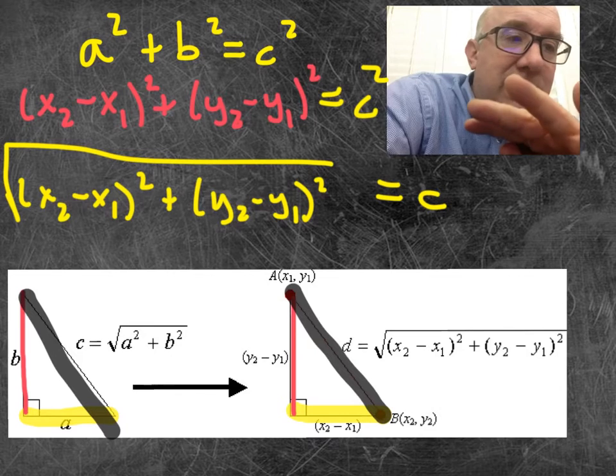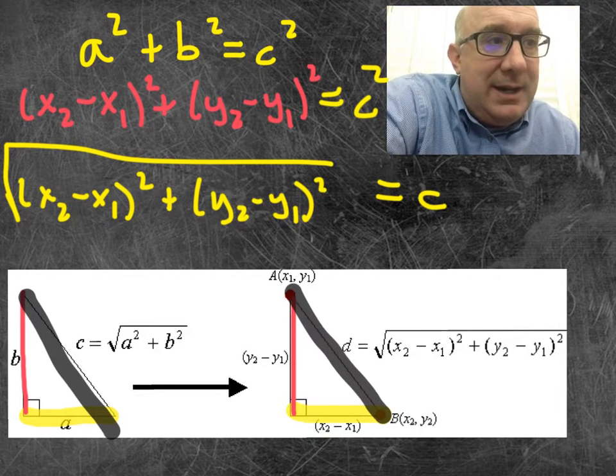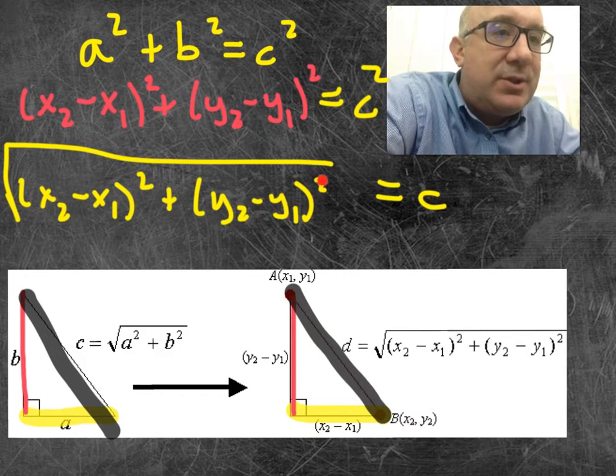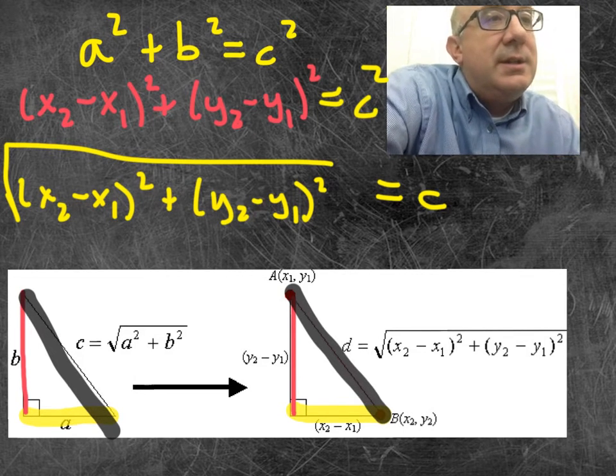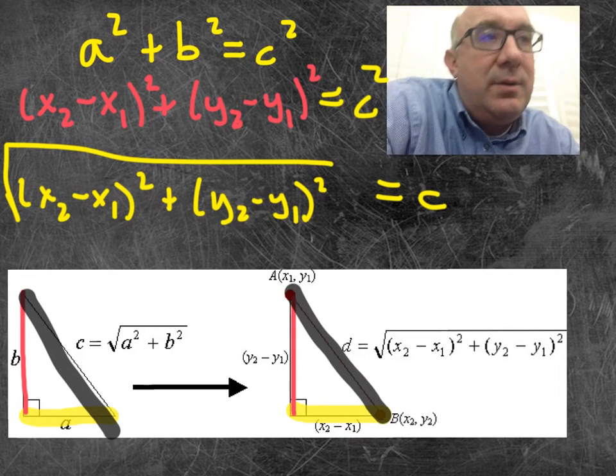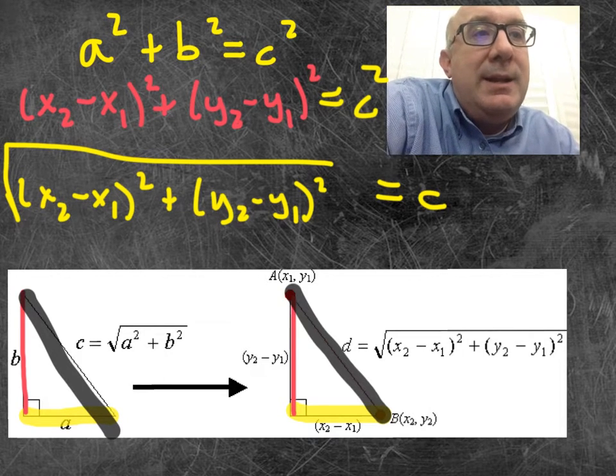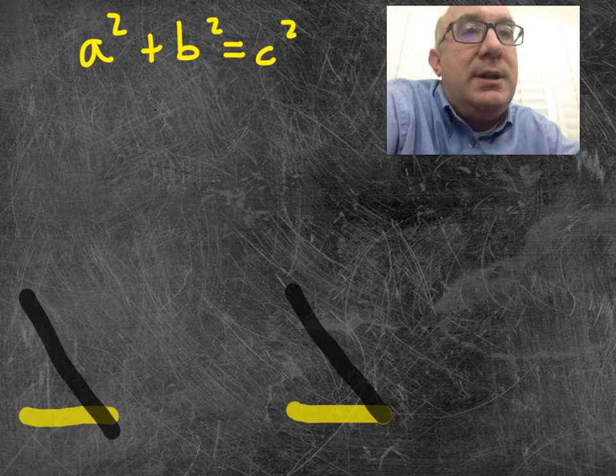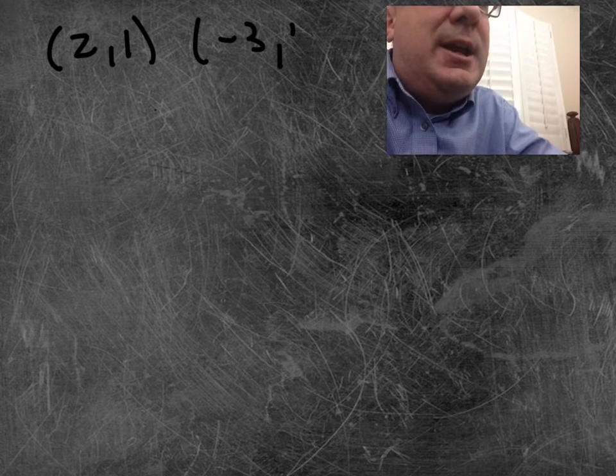So what I do, instead of do all of the mechanics of this, because students just get lost with the squaring and all these things. Let me show you how I do a distance formula problem. And let's see if you like it or don't like it. All right. So let's just pick any two points. Let's pick 2 and 1 and negative 3 and 4.